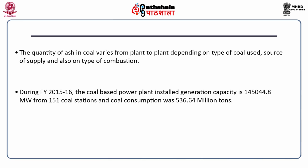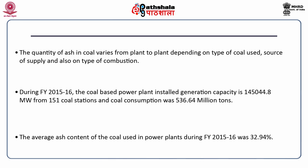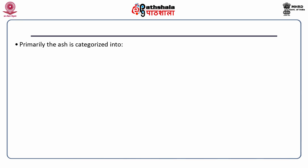During financial year 2015-16, the coal-based power plant installed generation capacity in India was 1,45,044 MW. Now this installed capacity is more than 200,000 MW from 151 coal stations. Coal consumption in Indian thermal power plants was about 536 million tons, and the average ash content of coal used was 32.94 percent — meaning about one third of the total coal used remains as fly ash.